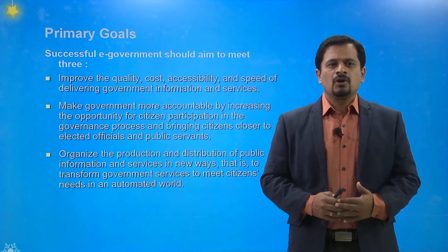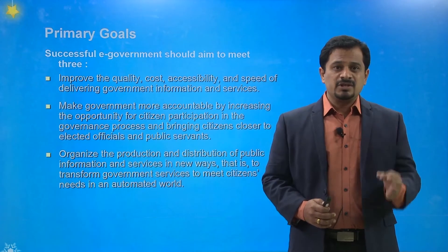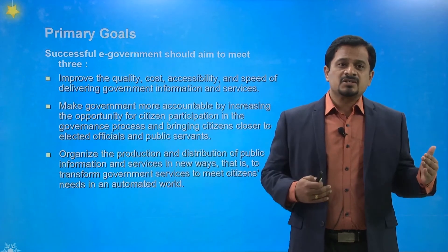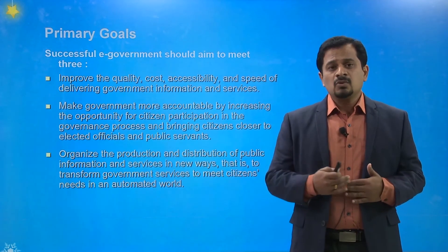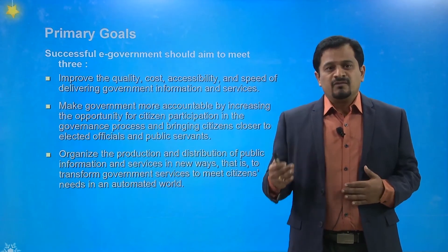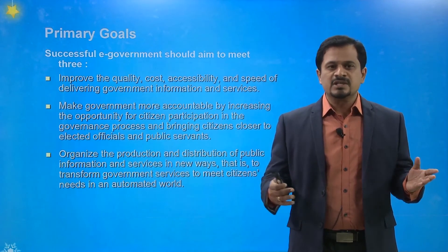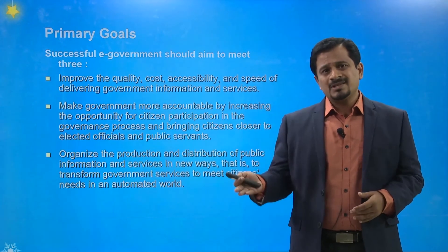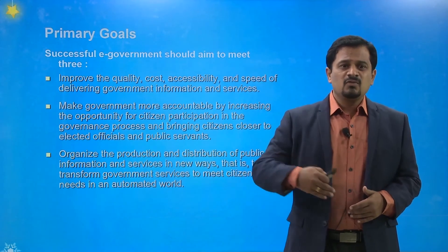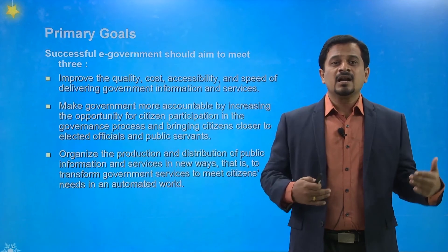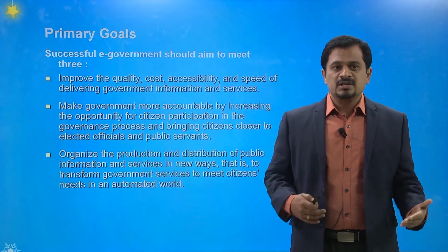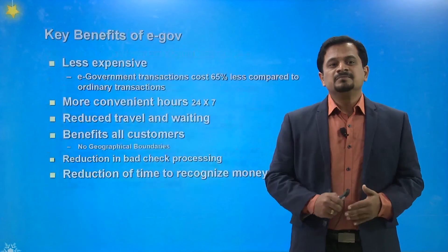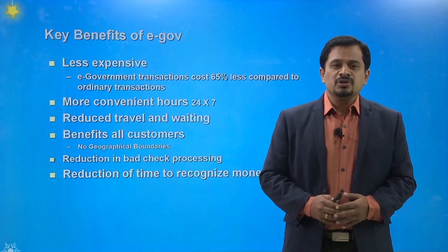The primary goals of successful e-government should aim to meet three major goals: improve quality, reduce cost drastically, and ensure accessibility from anywhere without boundary limits. Also, speed of delivering government information and services to all citizens, making the government more accountable, giving citizens opportunities to participate in policy-making, and organizing the production and distribution of public information services.